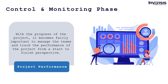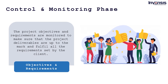With the progress of the project, it is important to manage teams and track project performance. Project management tools like Scrum or Kanban boards can give full visibility of project performance, with clarity and contingency planning to reduce shortcomings. In the control and monitoring stage, project objectives and requirements are also monitored to make sure that the project deliverables are up to the mark and fulfill all requirements set by the client.